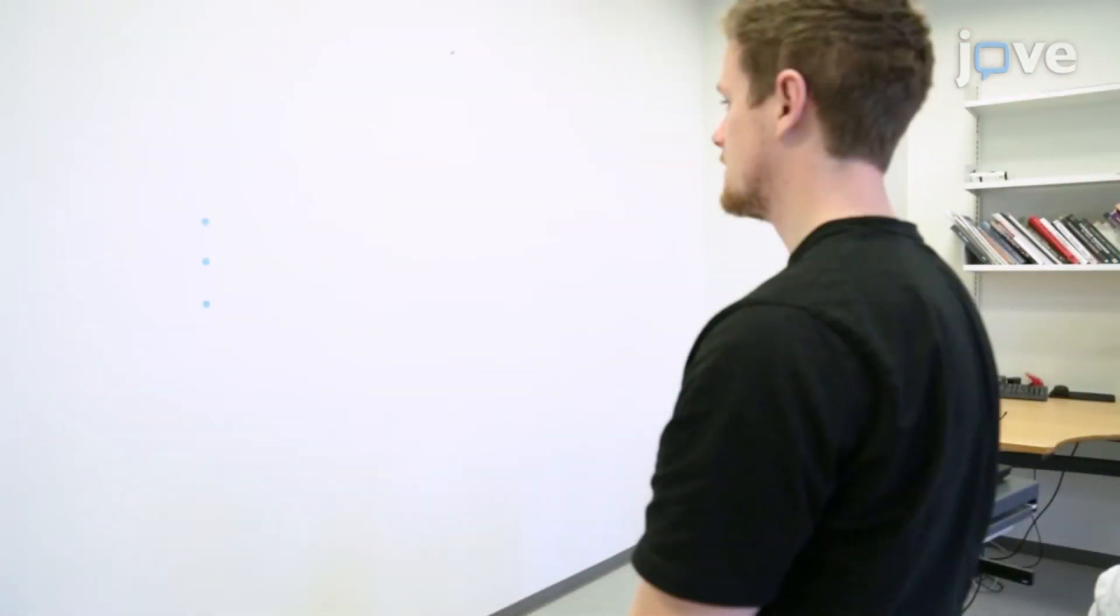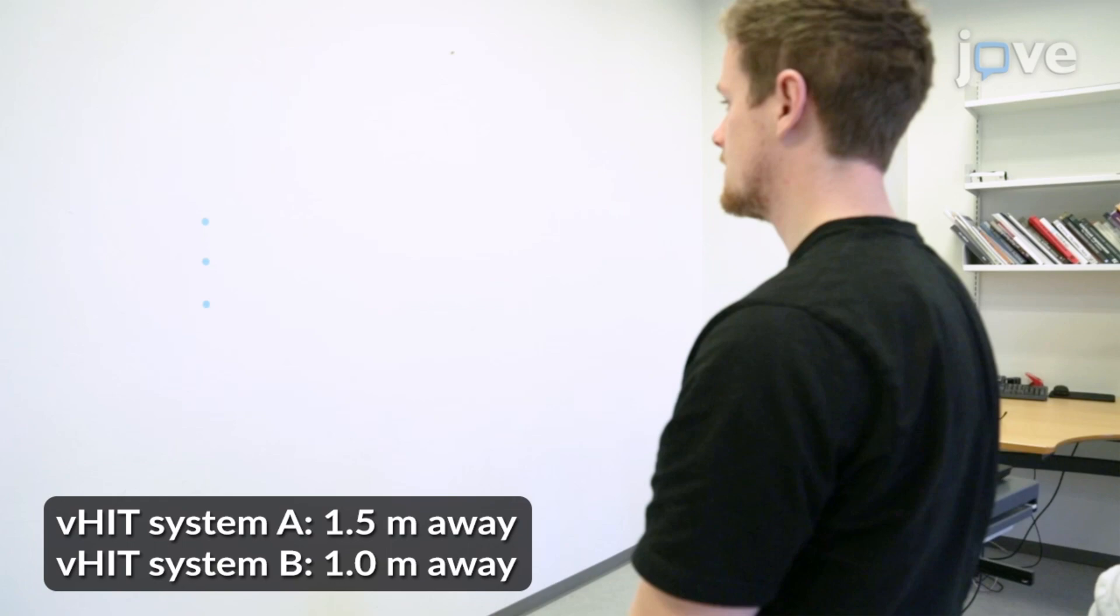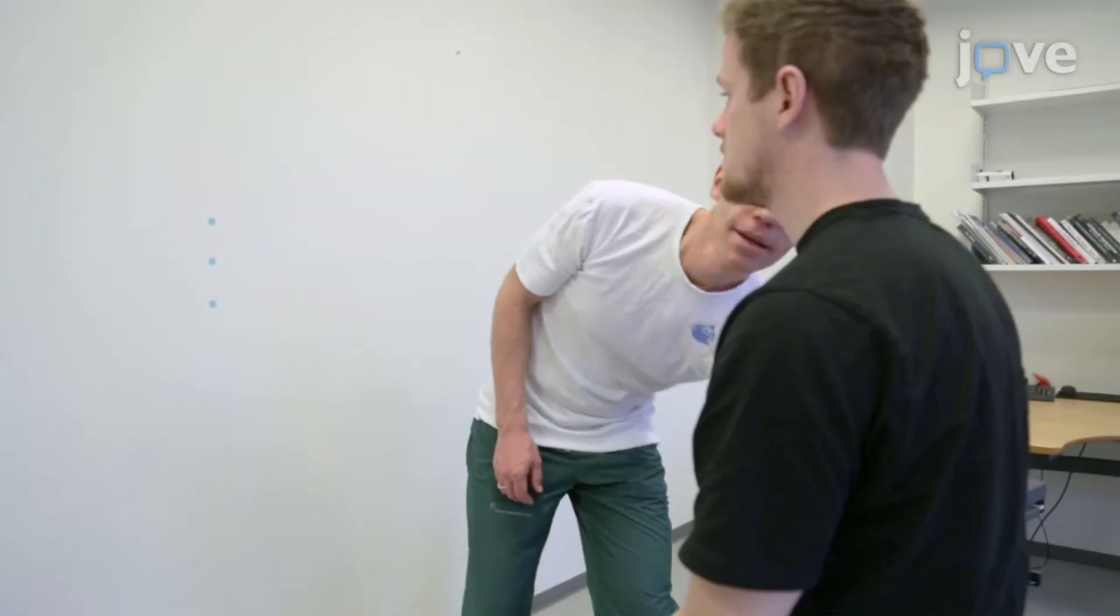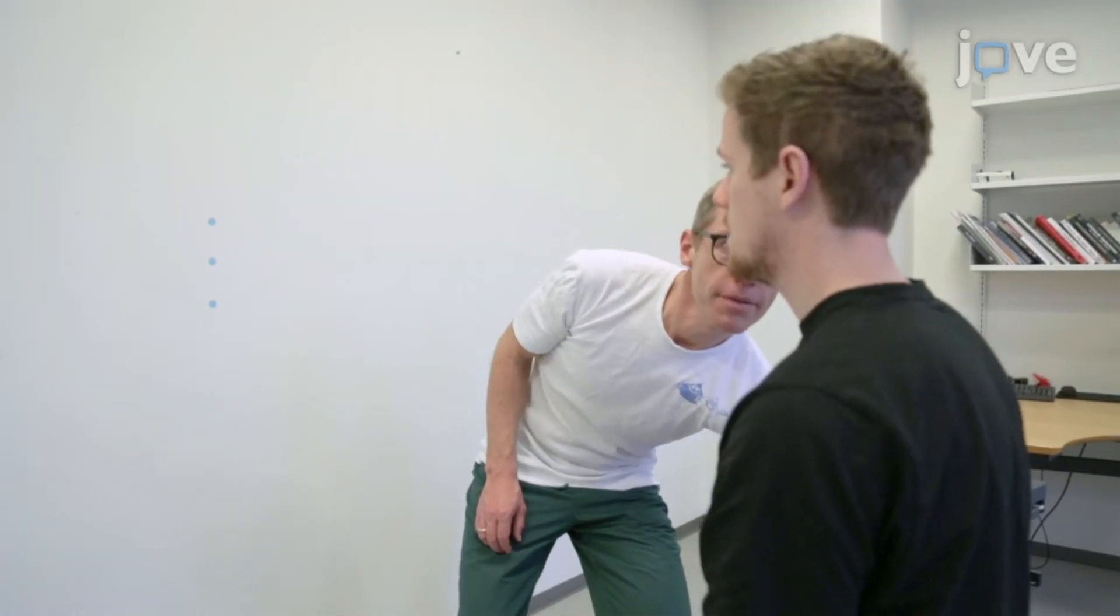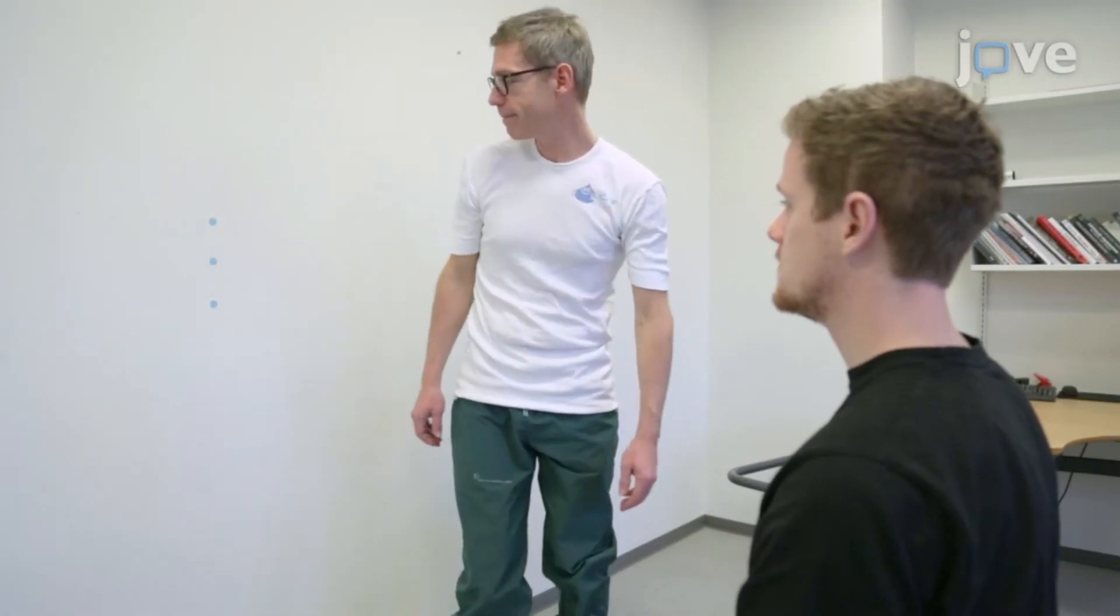Seat the participant in a non-rotating solid chair 1 to 1.5 meters away from a fixation dot placed on a wall for video head impulse testing or VHIT, depending on the type of VHIT system being used. As an alternative, place several dots in a vertical line at different heights. Adjust the height of the chair so that the eyes of the participant are leveled with the fixation dot.